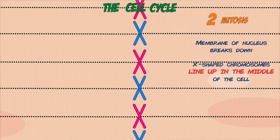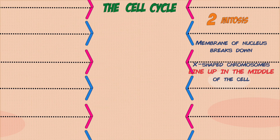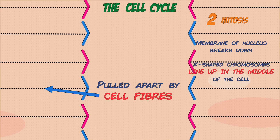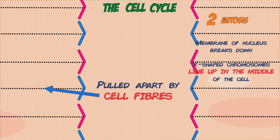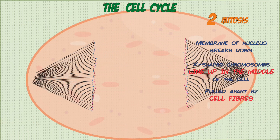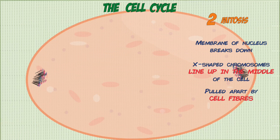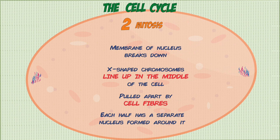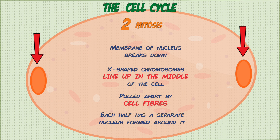They are then pulled apart by structures known as cell fibers, where each half goes to opposite ends of the cell and both halves are completely identical to each other. Two separate membranes now form around each set, which will become the nuclei of the two new daughter cells.